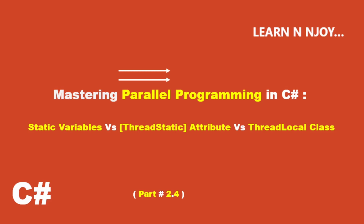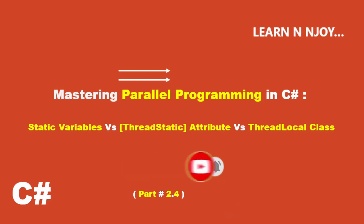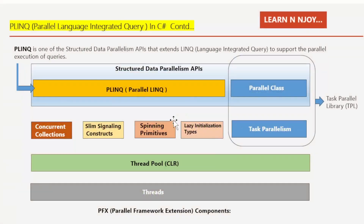Before we get started, just a quick reminder to subscribe to my channel, hit the bell icon, and you will be notified every time I upload a new video. If you watched my previous videos on the Mastering Parallel Programming series, you might recall this diagram. Today we'll go one step further and learn the concept of static variables versus thread static attribute versus thread local class.